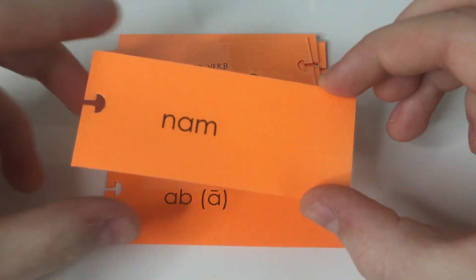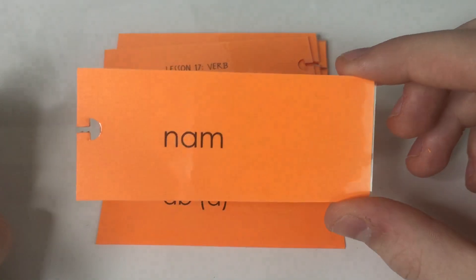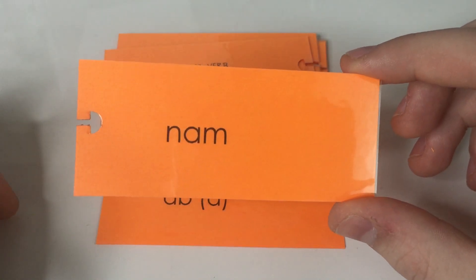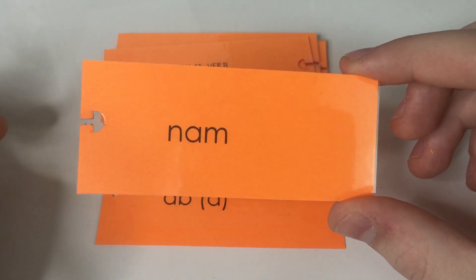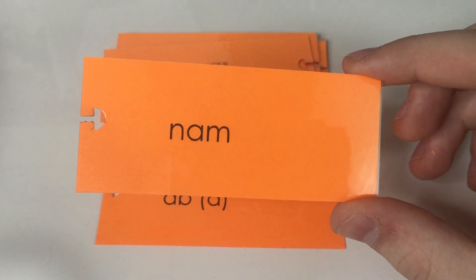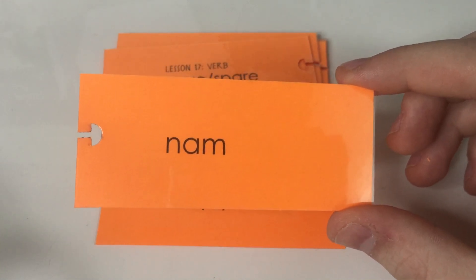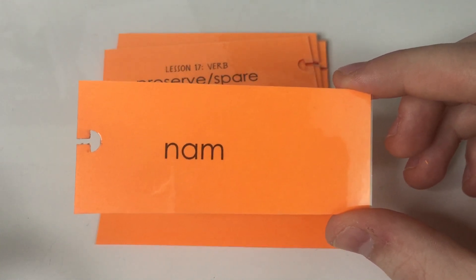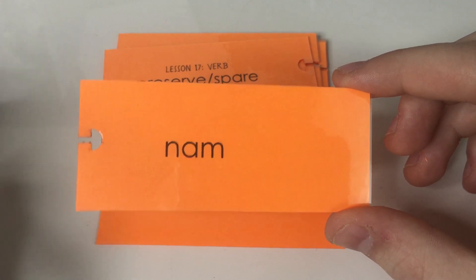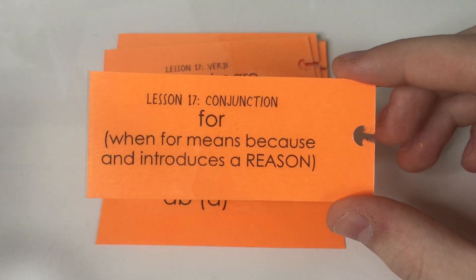And then we have nam. Nam is really short, but one way that makes it easier to remember is that it has three letters, and its meaning also has three letters. It means 'for' — but not for as in the number four. It means for as in because.